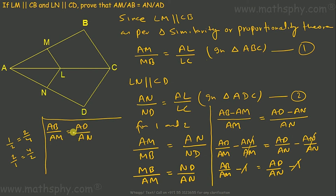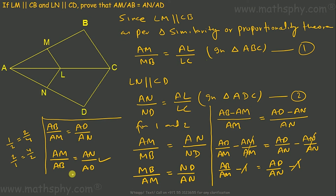Reversing both sides, we get AM over AB equals AN over AD — which is exactly what we had to prove.